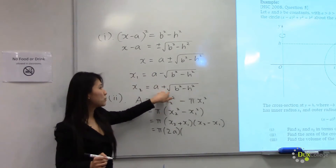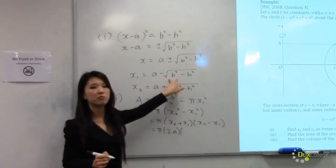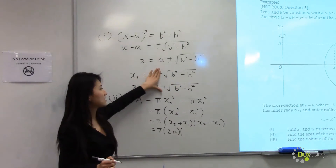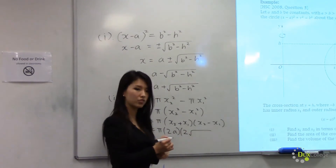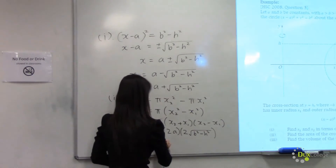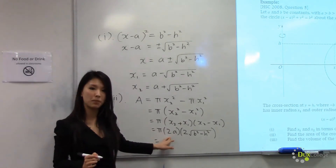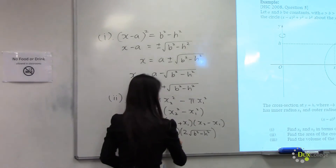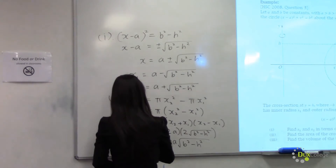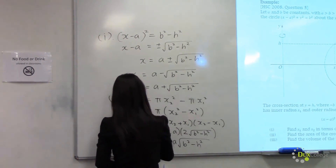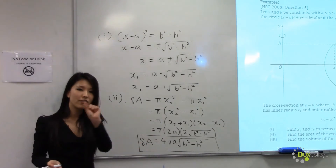When we compute x2 minus x1, the a's cancel out but the square root part is doubled, giving us 2 times the square root of b squared minus h squared. Simplifying this expression, we have 4πa times the square root of b squared minus h squared. This gives you the area of one very thin slice.